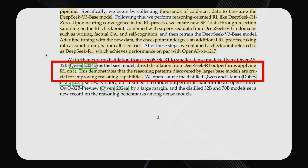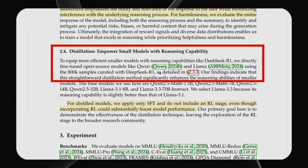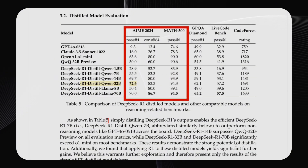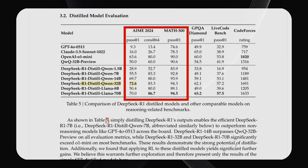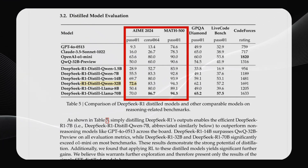They've released this whole family of models, which is really interesting. One notable finding is that direct distillation from DeepSeek R1 outperformed applying RL itself on the smaller models. So rather than using RL for the small models, they actually distill from 800,000 samples curated from DeepSeek R1 and then use that to fine-tune these smaller models. Even just taking the really long chains of thought from DeepSeek R1 and using them for fine-tuning gets these small distilled models to a high level of performance. And remember, the smallest one here is 1.5 billion parameters — these are outperforming not only GPT-4o and Claude 3.5 Sonnet, but the bigger ones are even outperforming the O1 mini models.